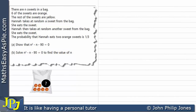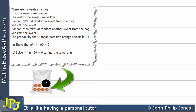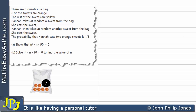Let's start by visualizing this particular problem. Here you can see a bag containing six orange sweets. This question mark represents the number of yellow sweets we have. We don't know how many yellow sweets there are at the moment, but what we do know is that the bag contains N sweets overall, where N is a particular number we don't yet know.